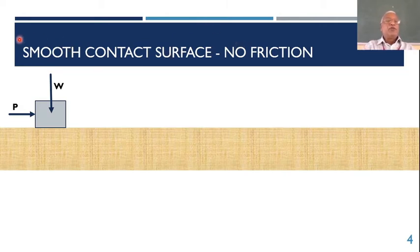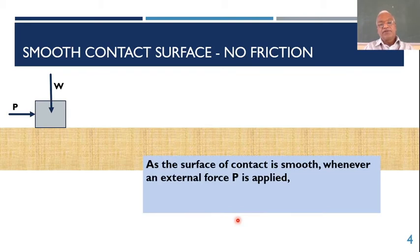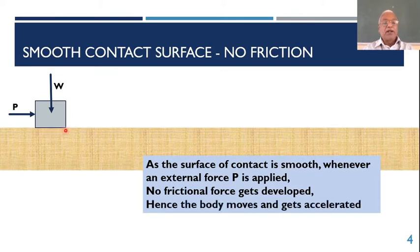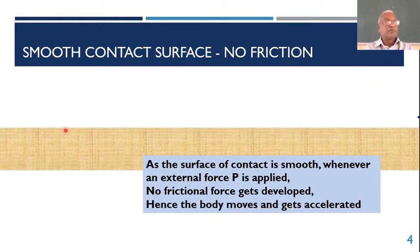First, consider a smooth contact surface with no friction. When an external force P is applied, the block just slides off. As the surface of contact is smooth, the block and surface have no friction. When an external force P is applied, no frictional force gets developed, and hence the body moves and gets accelerated — acceleration given by Newton's second law: P equals m times a.